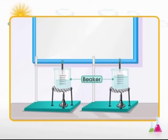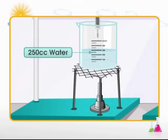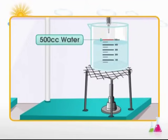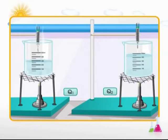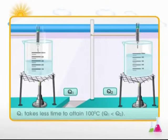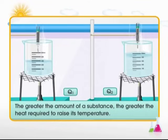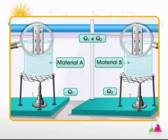Consider two beakers — one containing 250 cubic centimeters of water and the other containing 500 cubic centimeters of water. If you heat both beakers to 100 degrees Celsius, you will observe that 250 cubic centimeters of water takes less time compared to 500 cubic centimeters of water. You can conclude that the greater the amount of substance, the greater the heat required to raise its temperature. Two different materials also require different amounts of heat to attain the same temperature.